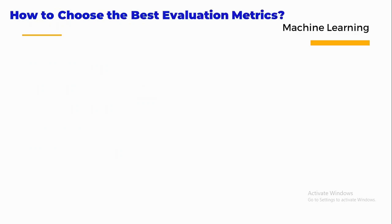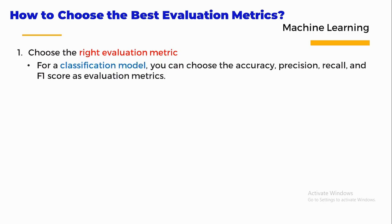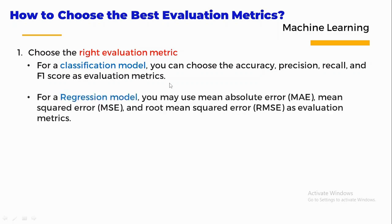Now let us understand how to choose the best evaluation metrics. The first step is to choose the right evaluation metrics. For a classification model, you can choose accuracy, precision, recall, and F1 score as evaluation metrics. For a regression model, you may use mean absolute error, mean square error, and root mean square error as evaluation metrics.